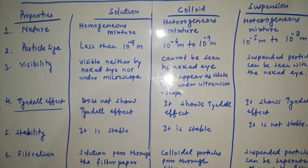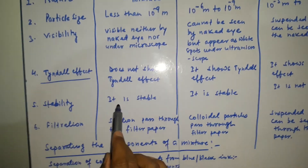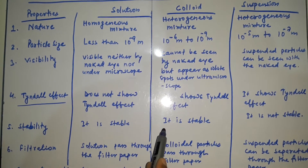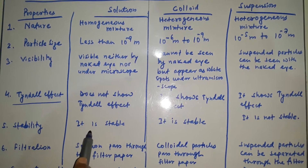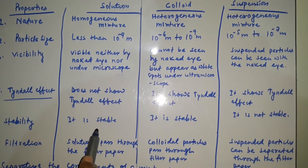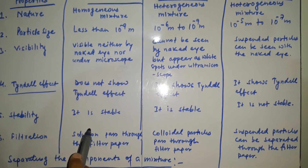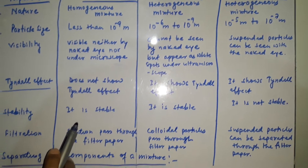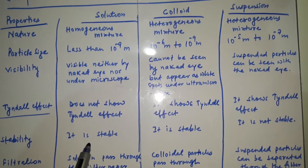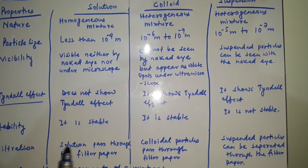The next property is stability. Solution is stable and colloid is also stable. But suspension is not stable. If we keep a sample of solution on a surface without any disturbance for a few hours, the components will not be separated at all — it will remain stable. The same condition is there for colloid. But suspension is unstable.